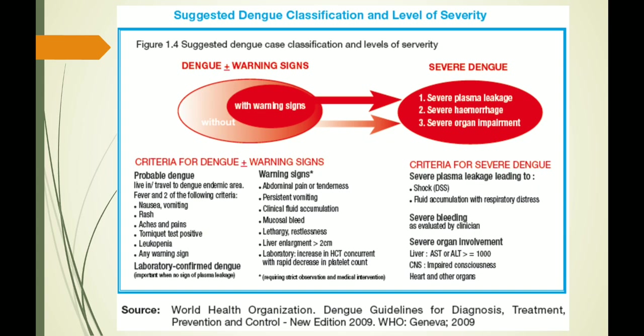Severe dengue is a category where dengue hemorrhagic fever minus the tourniquet test along with dengue shock syndrome fall under. There are signs of severe plasma leakage leading to shock and fluid accumulation, severe bleeding and organ involvement with elevated liver enzymes and impaired consciousness.